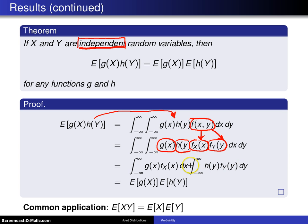By definition, this right here is the univariate expected value of g of x, and this right here is the univariate expected value of h of y.